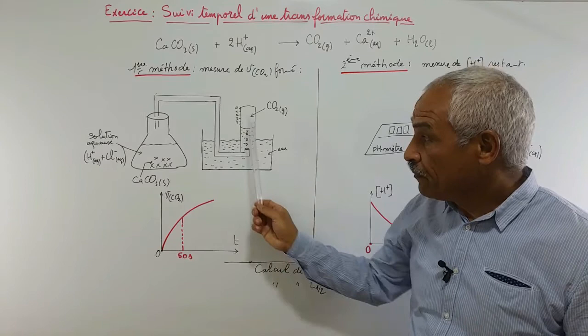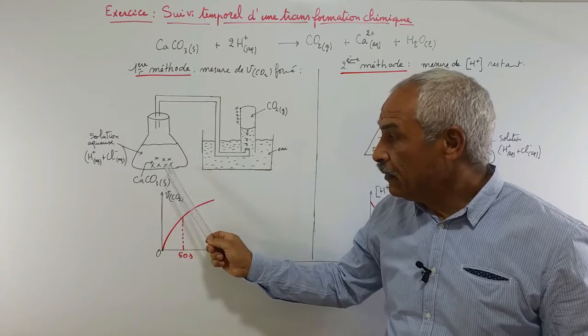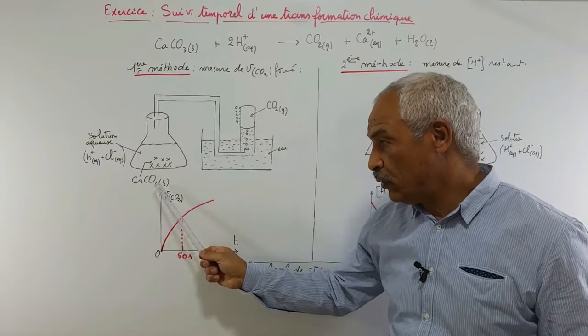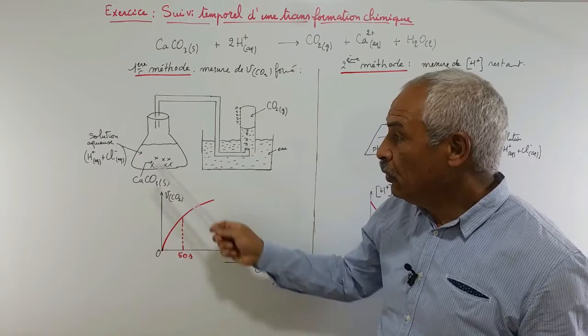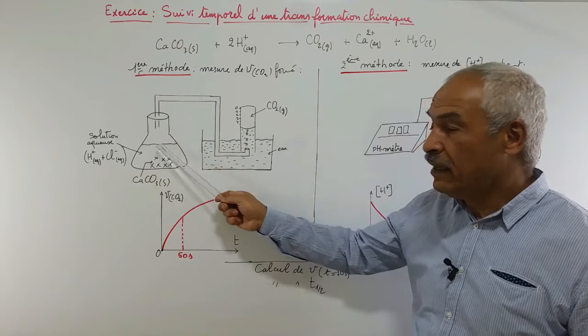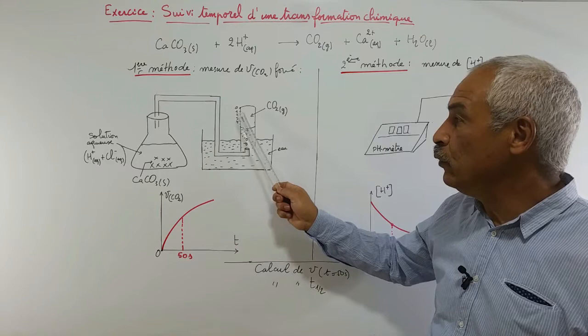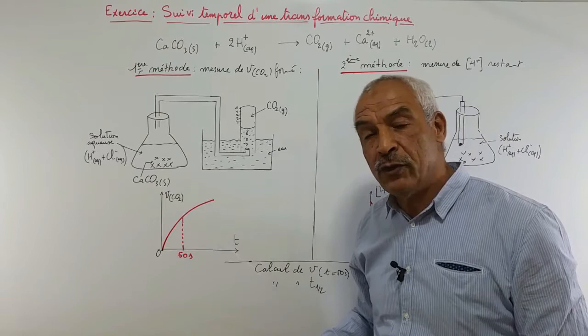Le montage utilisé est constitué d'un Erlenmeyer contenant le mélange réactionnel. Dans ce mélange, il y a le CaCO3 solide et la solution aqueuse d'acide chlorhydrique. Le CO2 formé va passer par un tube et finir dans une éprouvette graduée dans laquelle il va occuper un volume V. Ce volume V augmente en fonction du temps au cours de la réaction.